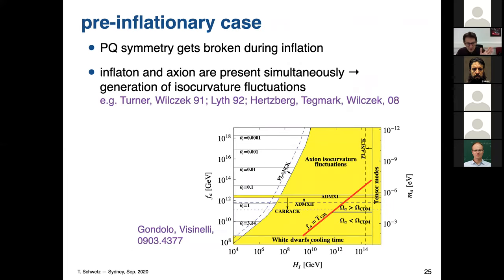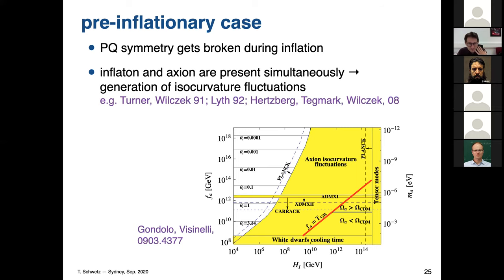As a remark: in the pre-inflationary case, there are also isocurvature fluctuations because both the inflaton field and the axion field are present simultaneously during inflation. This leads to well-known isocurvature constraints in the pre-inflationary scenario, studied since the early 1990s. What we pointed out is that also in the post-inflationary case, those isocurvature components are interesting and can give relevant constraints — for some reason this was not discussed before.